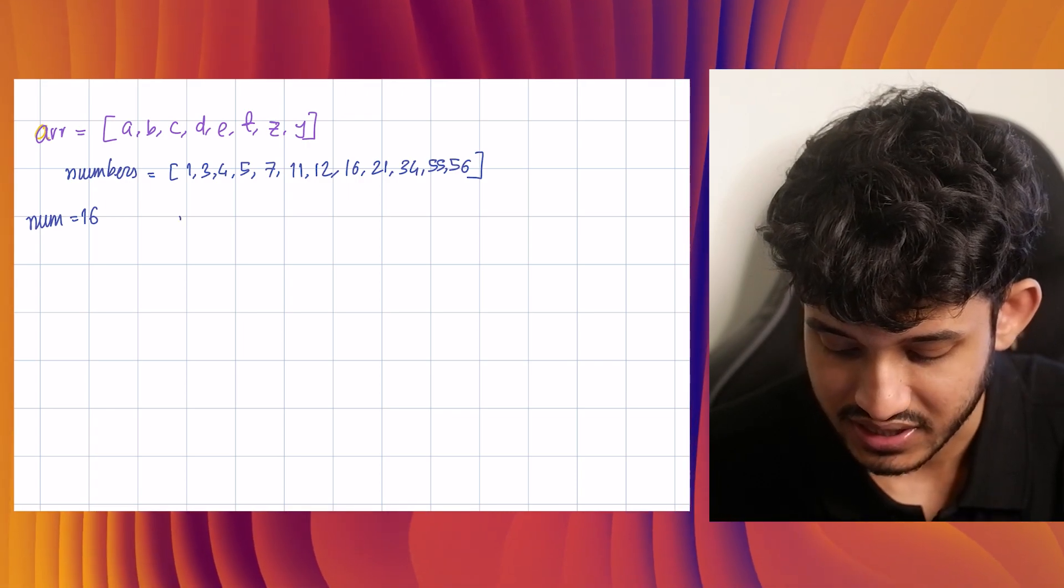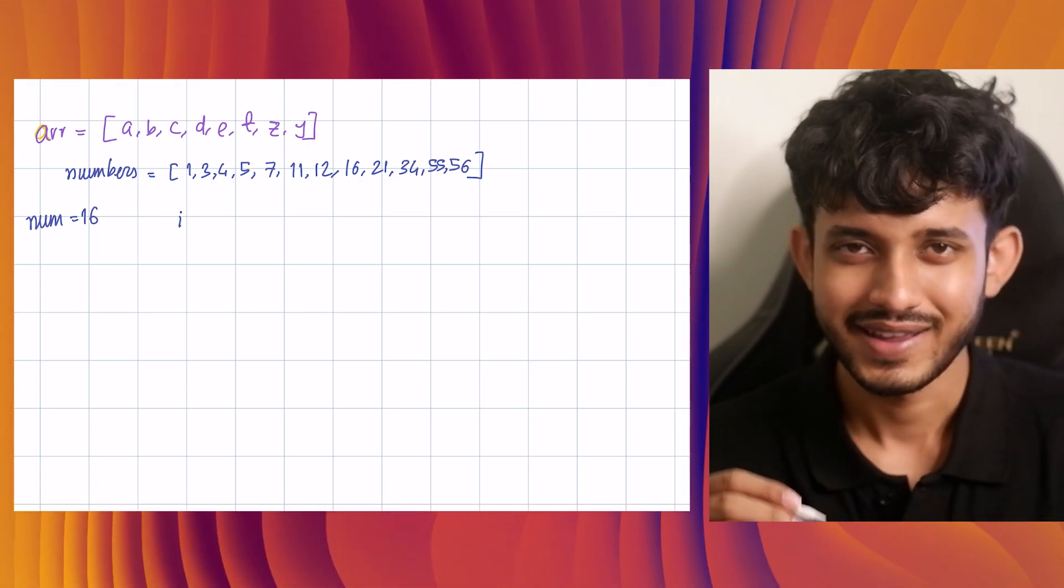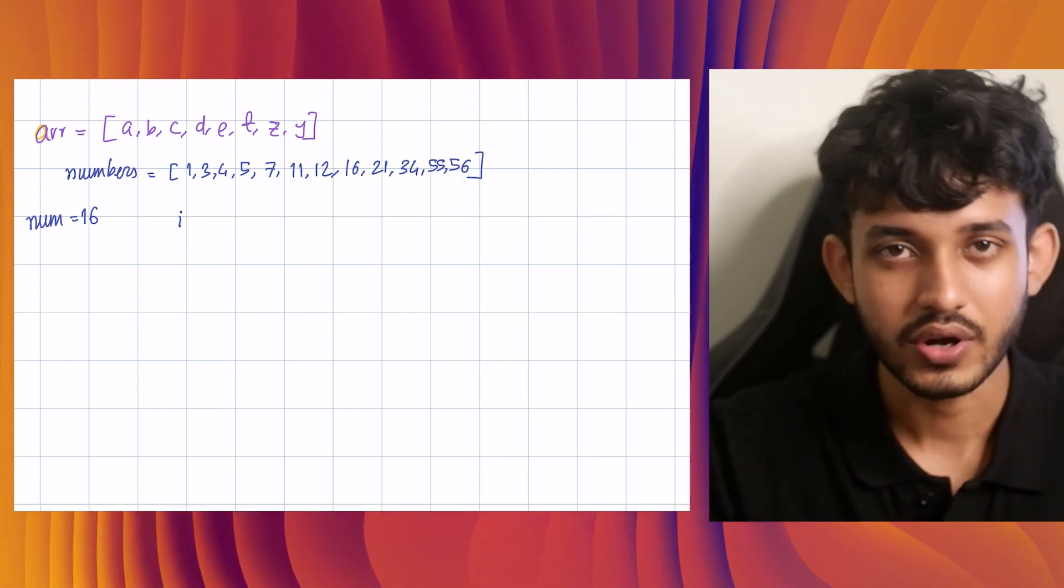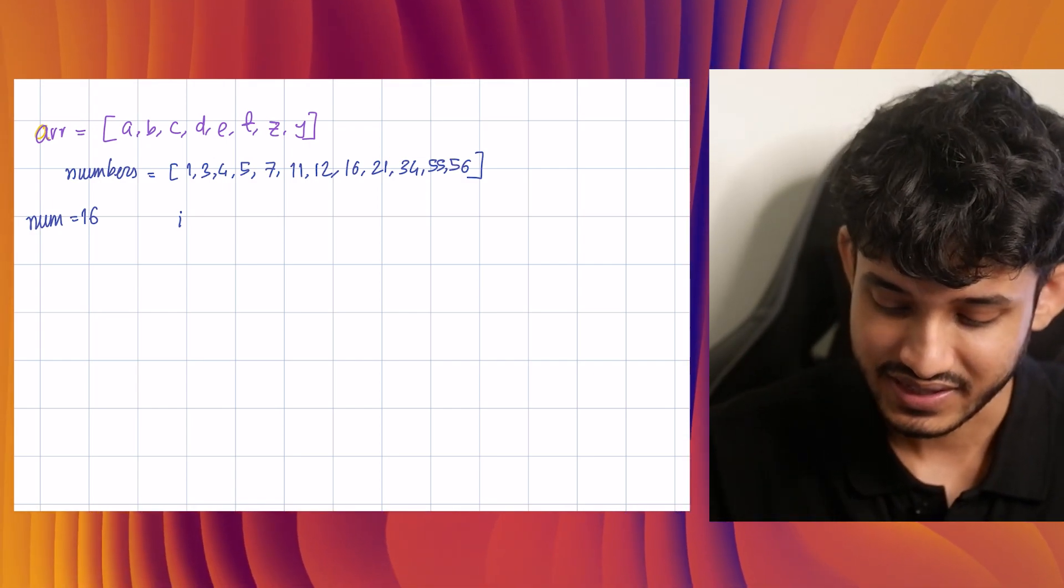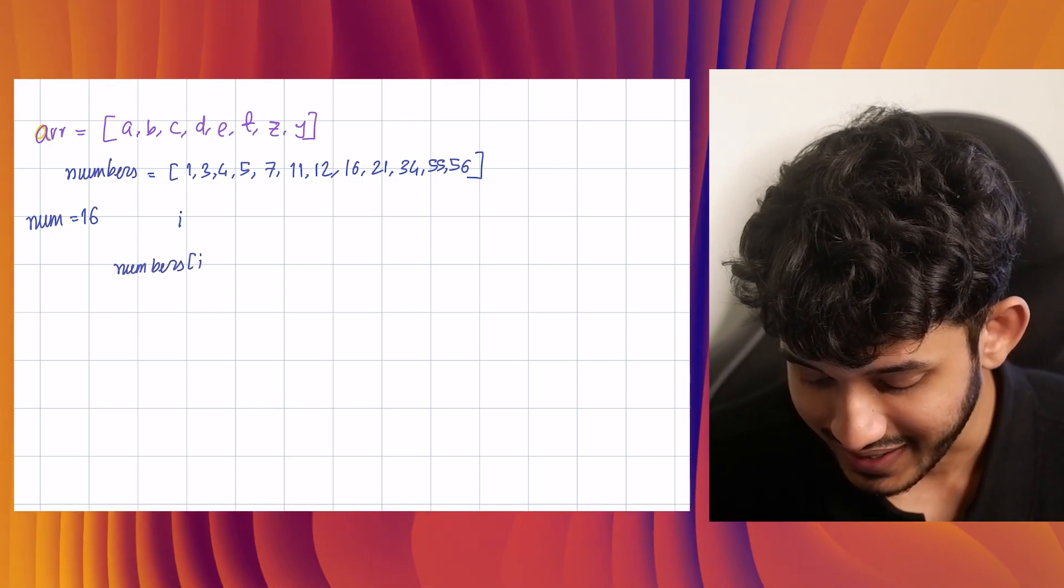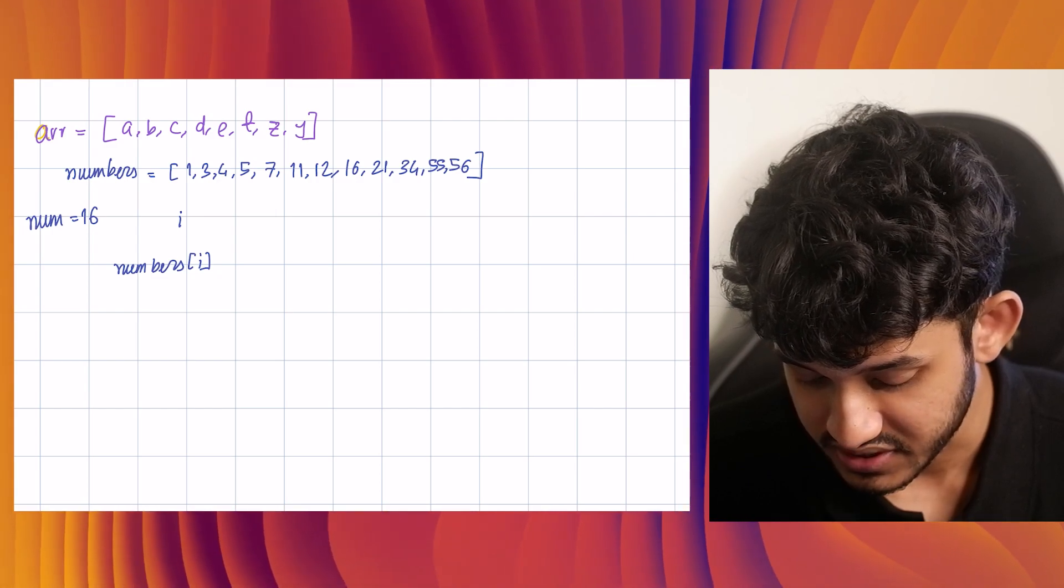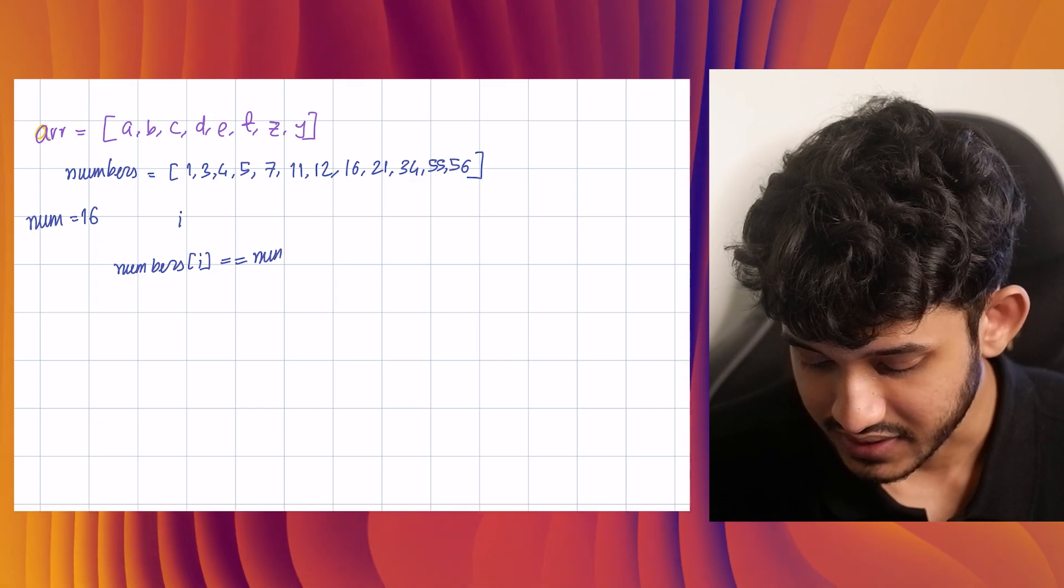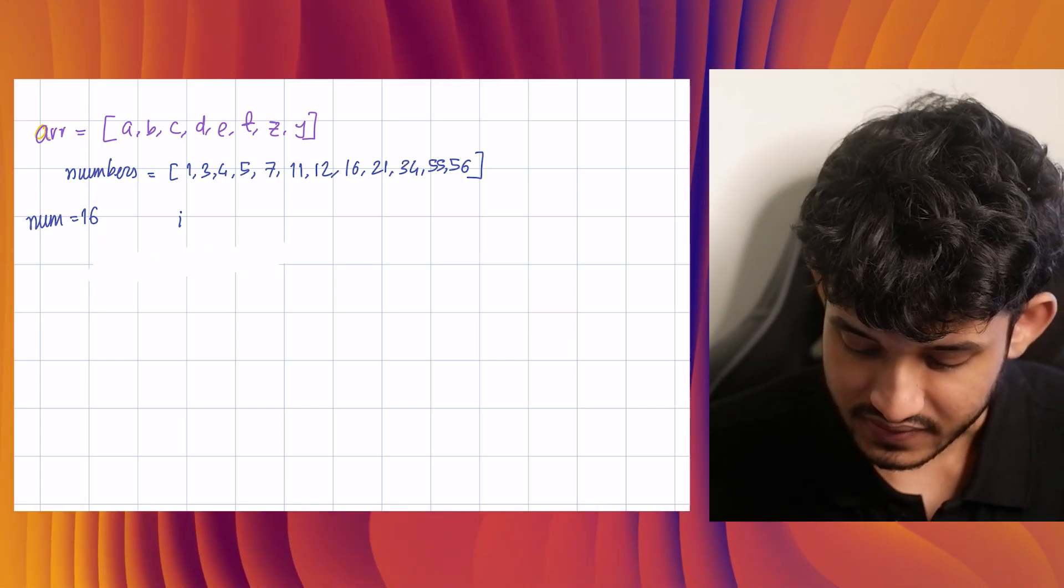We initialize a new variable called i that we use as the index and we initialize it at zero. And then we keep increasing it. And then we keep checking if numbers[i], that is the ith element of the numbers array, if it is equal to number, that is 16. That makes sense.